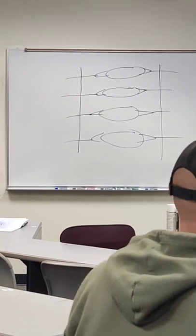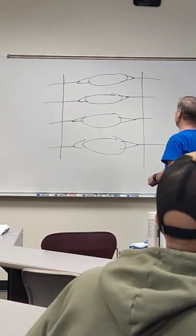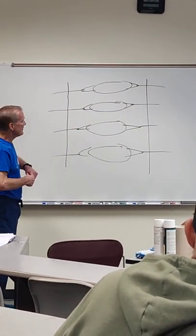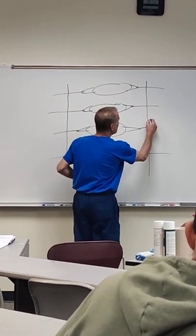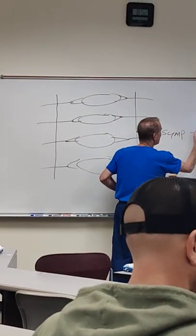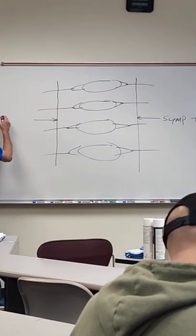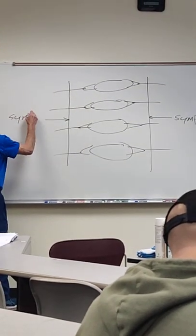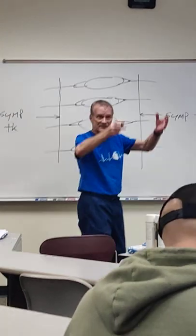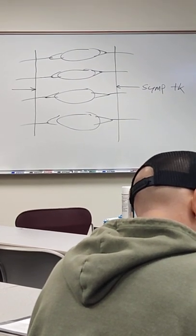On each side of your spinal cord there is a longitudinal connection through the spinal nerves, and that longitudinal connection is called the sympathetic trunk. It's another way that information can travel vertically or longitudinally along the cord.